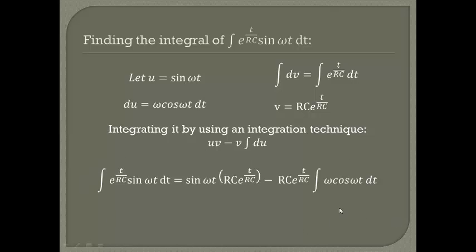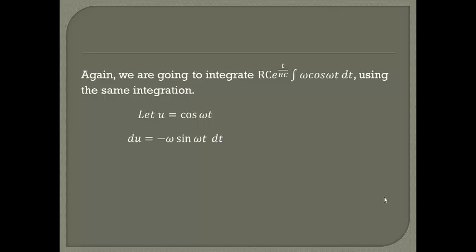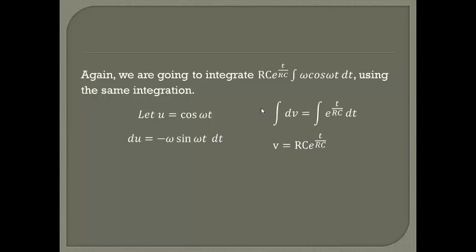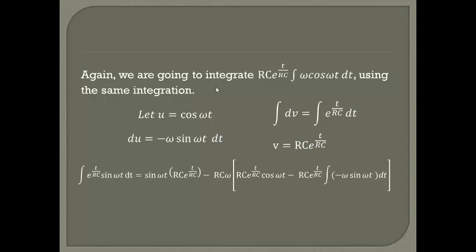Now there is still an integral of ω cosine(ωt) dt remaining, so again we integrate RC · e^(t/RC) · ∫ω cosine(ωt) dt using the same integration by parts technique, letting u = cosine(ωt) and dv = e^(t/RC) dt. This gives us u·v minus ∫v du.